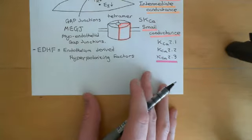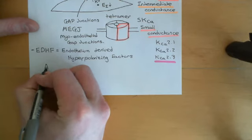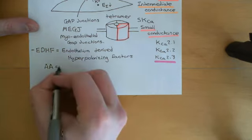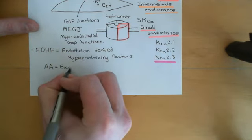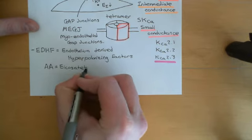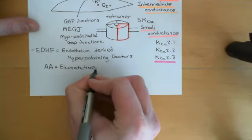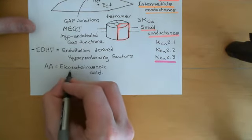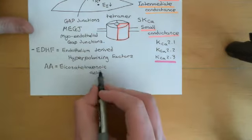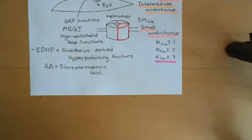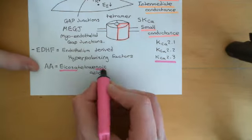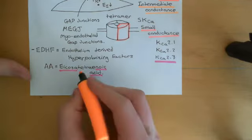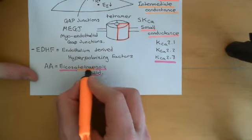Arachidonic acid, abbreviated to AA, can also be called eicosatetraenoic acid. Eicosa means that it is a 20-carbon carboxylic acid, and tetra means that it has four double bonds, so it's not a fully saturated carboxylic acid.